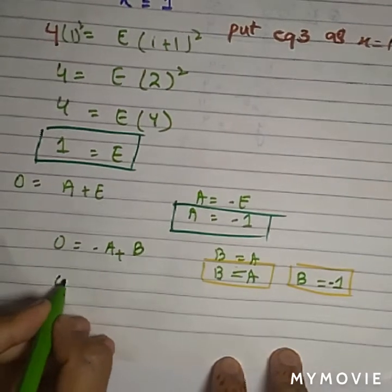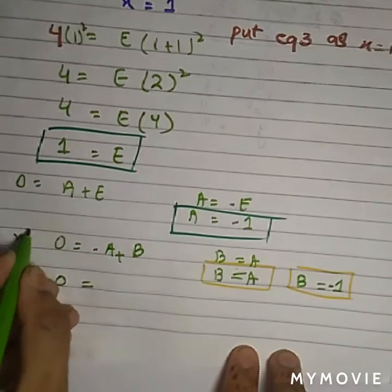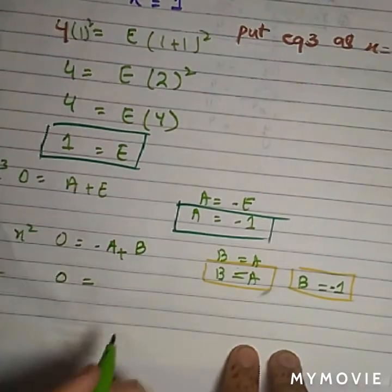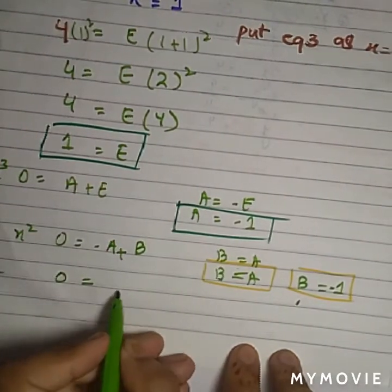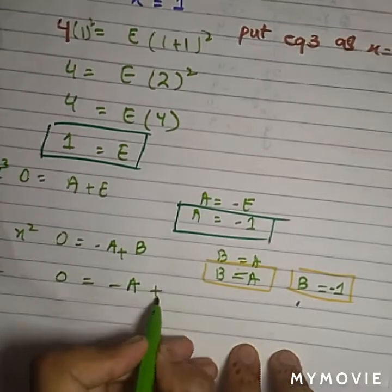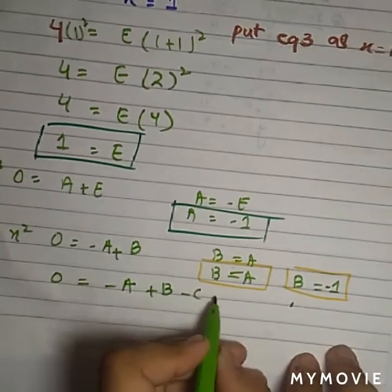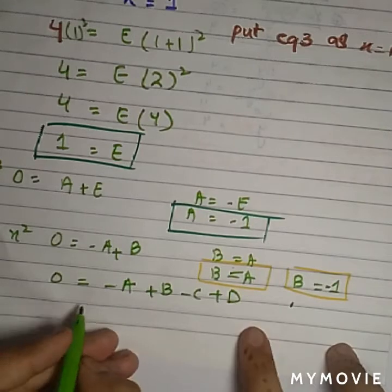Now you have to do: zero equals minus A plus B minus C plus D. This is for the equation x cubed, because we equated all the values for x. Then B equals A, and A is minus 1. Marking is a must, followed by you every time.